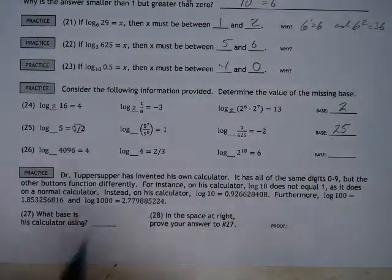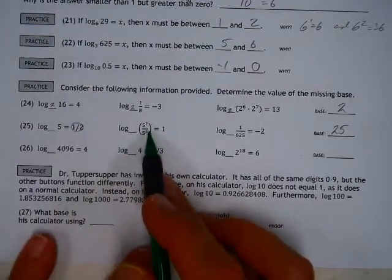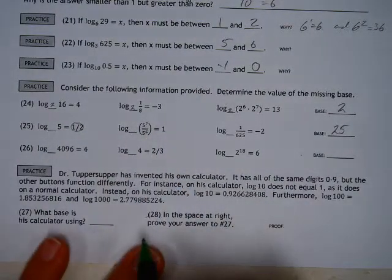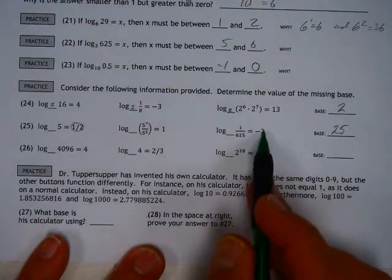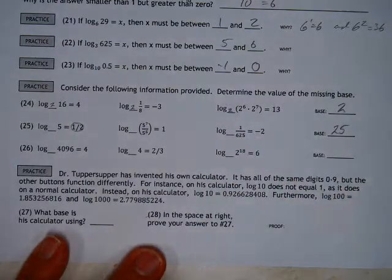You go through that same process. 25, if that's our base, the first power, that would be, and you reduce this, subtract the exponents, 5 squared. And then 5 to the negative 2nd power would be, flip it, and 25 squared is 625, and so on.